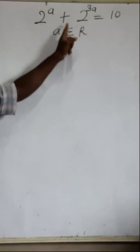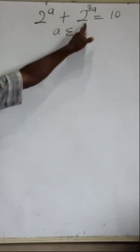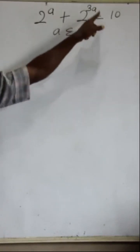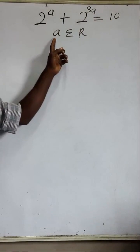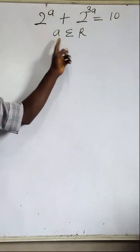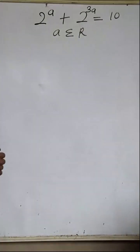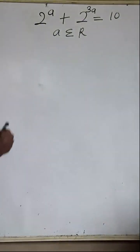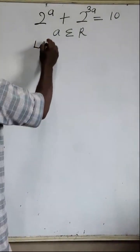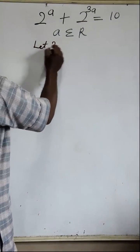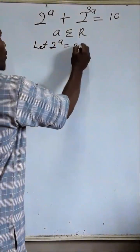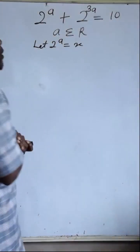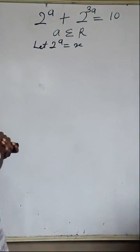We have a + 2 raised to the power 3a is equal to 10, and the value of a is a real number. To make it easy to solve, the first thing we are going to do is let 2 raised to the power a be equal to x.